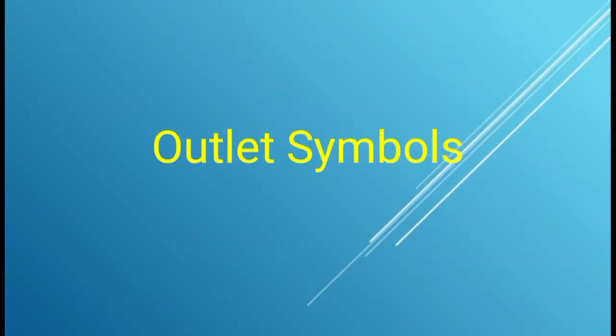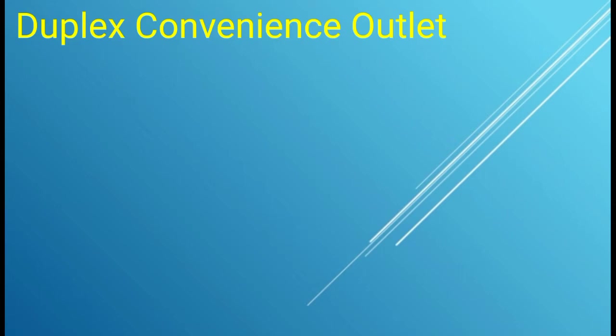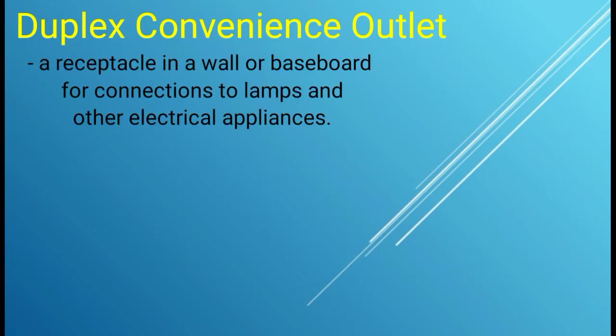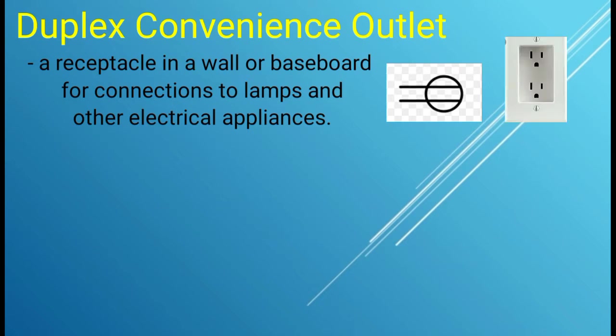Next, we have the outlet symbols. First is the duplex convenience outlet, a receptacle in a wall or baseboard for connection to lamps or other electrical appliances. This is the symbol and the picture. It is called duplex because it has two sets of outlet.